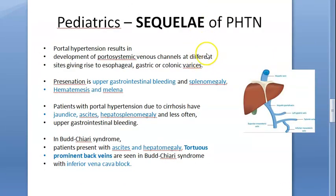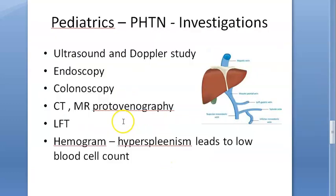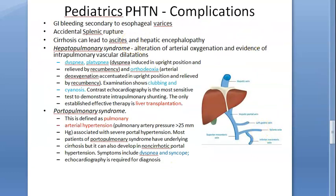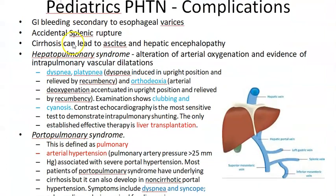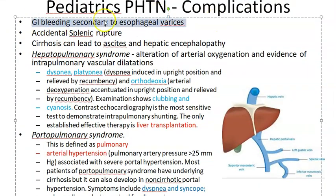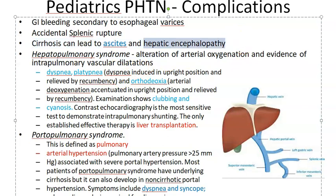Looking at the complications of portal hypertension: GI bleed from esophageal varices, hypersplenism where the spleen can accidentally rupture with mumps or trauma, ascites, and hepatic encephalopathy due to toxin buildup.